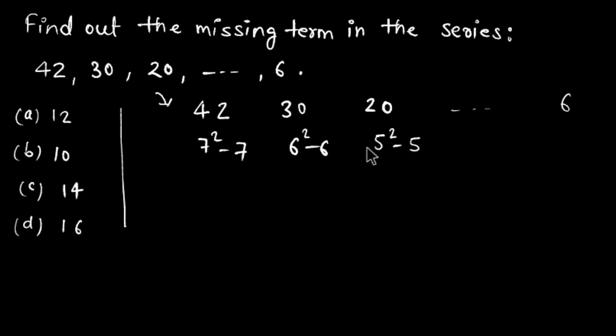5 squared is 25 minus 5 is 20. So the missing term will be 4 squared minus 4. I get 16 minus 4, so 16 minus 4 is 12.